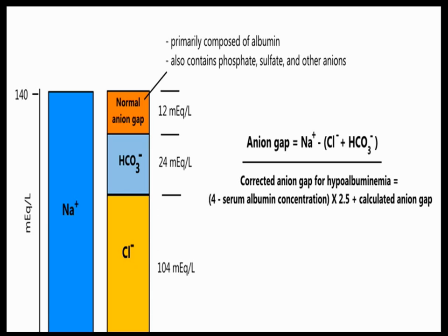The anion gap exists because there are unmeasured anions like phosphates, sulfates, lactic acid, and ketone bodies. In pathology, it is normally due to phosphates and sulfates. Albumin also plays a very important role in the formation of the anion gap. To calculate the anion gap without potassium, you take sodium minus the sum of chloride plus bicarbonate, which gives a normal value of around 12.